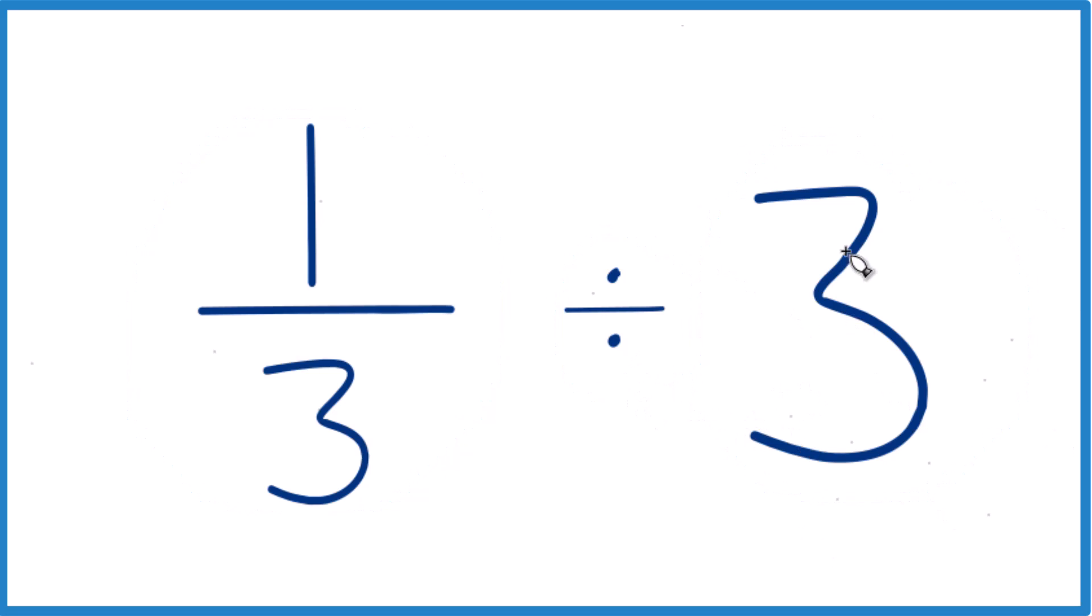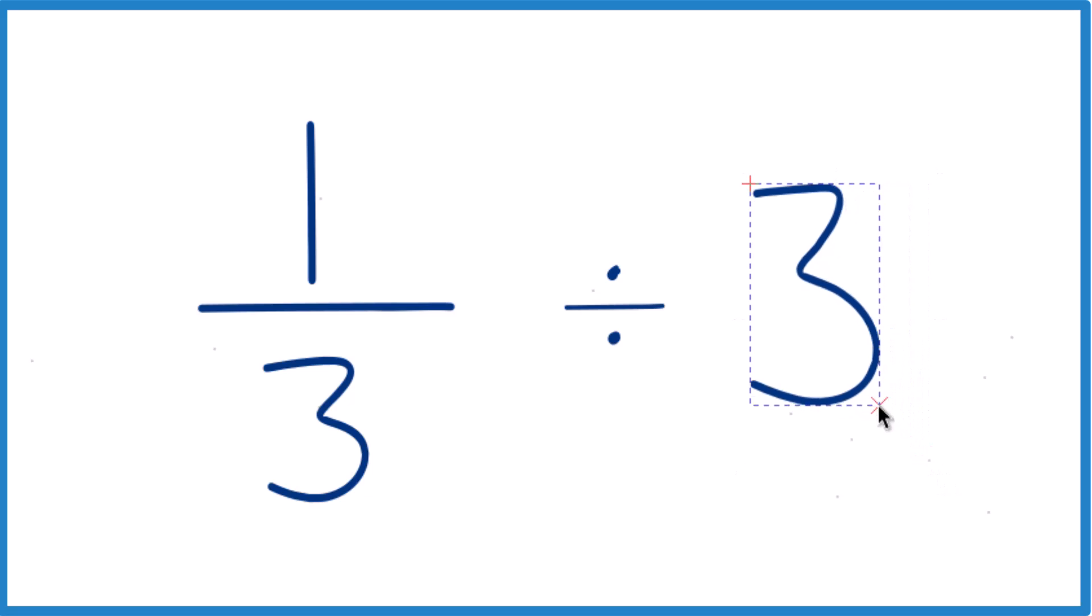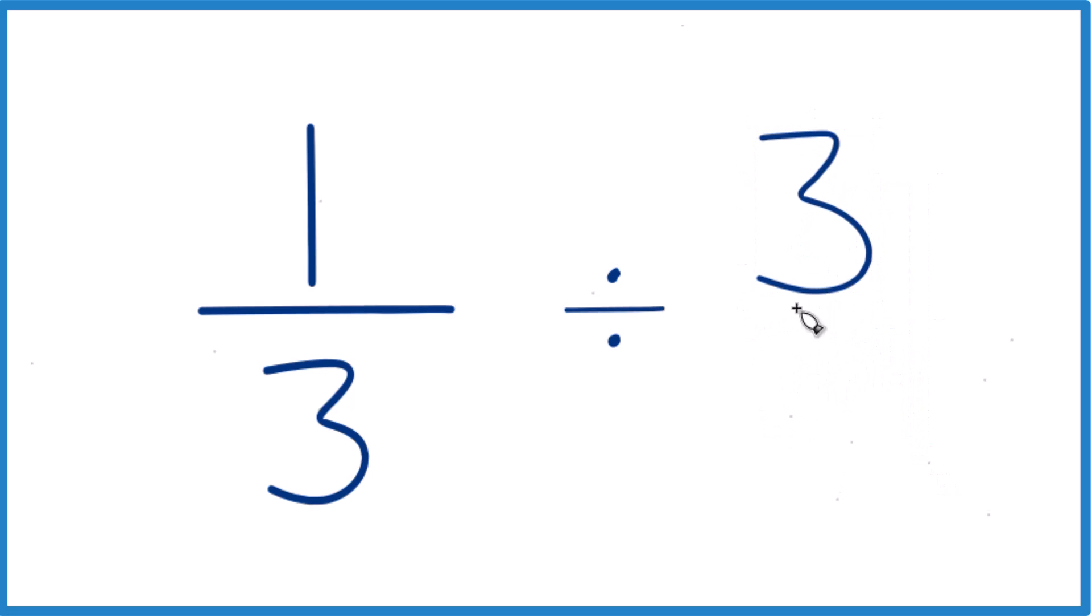First thing I like to do is take that three there and make that three over one. Because three divided by one, that's still three, but now everything kind of lines up nicely.